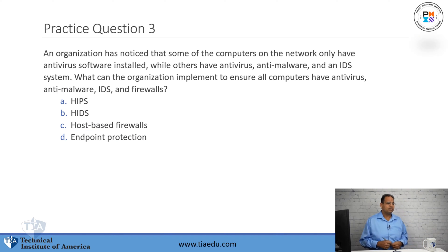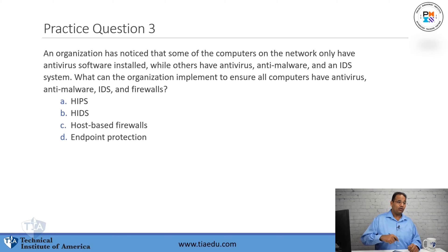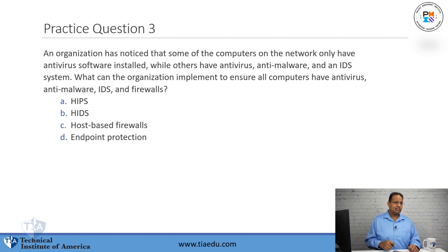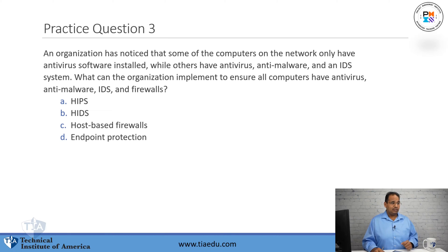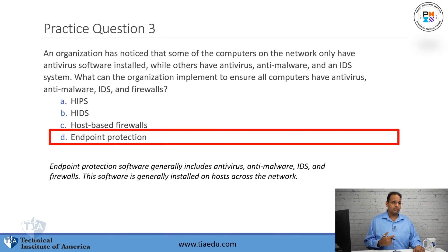Practice question number three: An organization has noticed that some computers on the network only have antivirus software installed, while others have antivirus, anti-malware, and an IDS system. What can the organization implement to ensure all computers have antivirus, anti-malware, IDS, and firewalls? A. HIPS. B. HIDS. C. Host-based firewalls. D. Endpoint protection. The answer is endpoint protection.